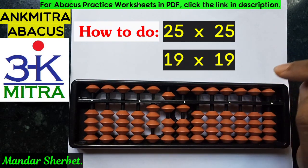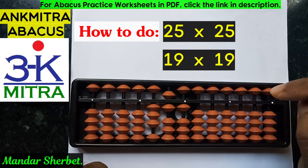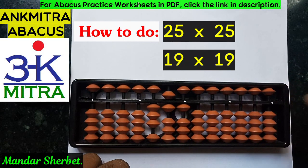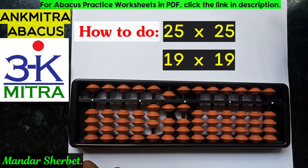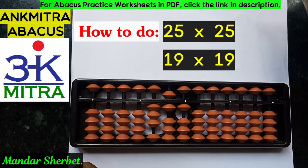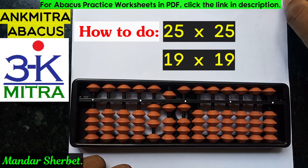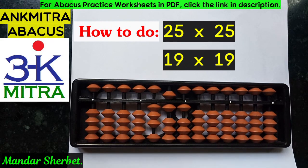I hope the procedures for both these multiplications — 25 multiplied by 25 and 19 multiplied by 19 — are well understood by everyone. In case of any difficulties, please mention it in the comments and I'll try to address it in an upcoming video. Thank you.